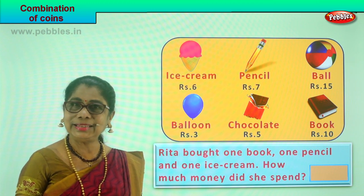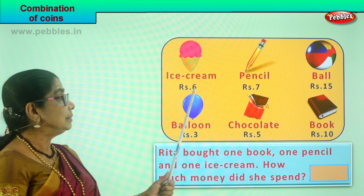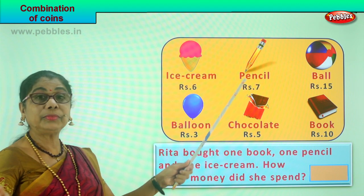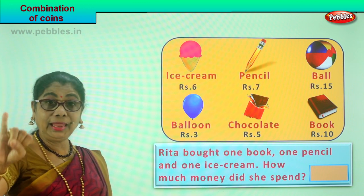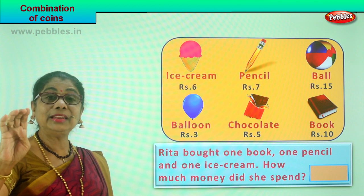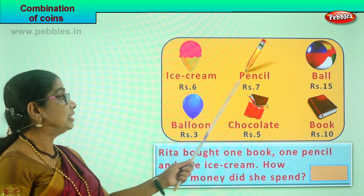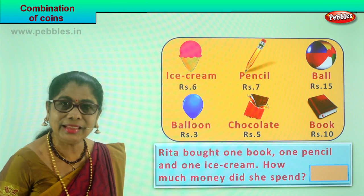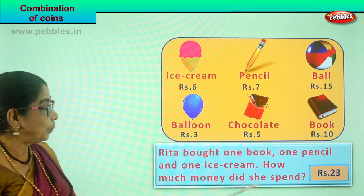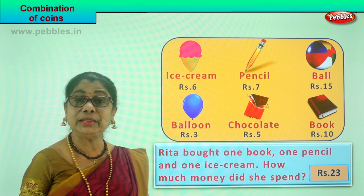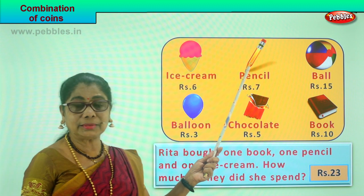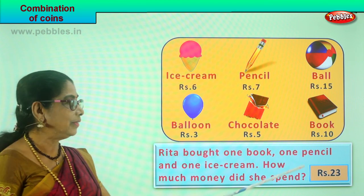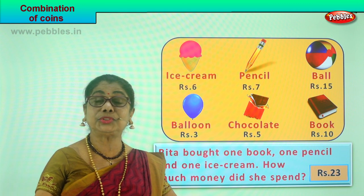Let's add them all. Six plus seven — count up: seven, eight, nine, ten, eleven, twelve, thirteen. Six plus seven is thirteen. Thirteen plus ten is twenty-three rupees. Rita spent twenty-three rupees in coins to get a book, a pencil, and an ice cream. Rita has given twenty-three rupees in coins to the shopkeeper.